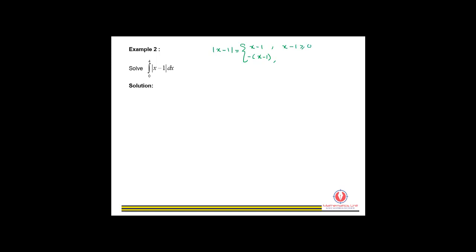The absolute value |x−1| equals positive (x−1) when x−1 is greater than or equal to 0, meaning x is greater than or equal to 1. So for x greater than 1, the absolute value will be positive x minus 1.